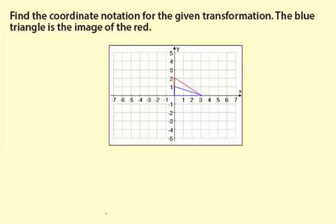Find the coordinate notation for the given transformation. The blue triangle is the image of the red. Okay, so let's take a look.